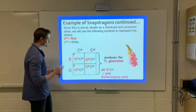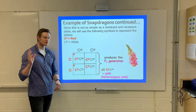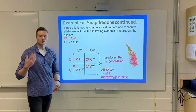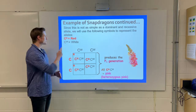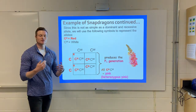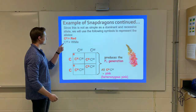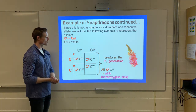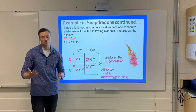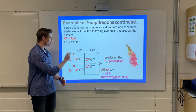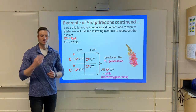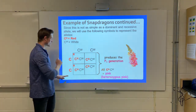Notice how when we write the alleles here, we do something a little different. You can still use capital and lowercase letters, but for incomplete and co-dominants as well as multiple alleles, we sometimes add a superscript letter or number to help differentiate between the two alleles. So C stands for color, R for red, W for white. If we get two reds we have red; two whites gives white; and a red with a white gives pink.